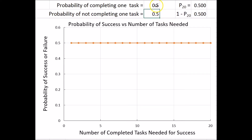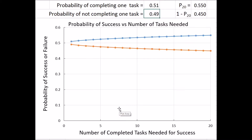Let's make our probability of success a little bit higher — I'm going to make it 0.51. The probability of failure would be 0.49. And you can see in the blue curve, the probability of success increases rather dramatically just by increasing your edge a little bit — improving your skill and increasing your ability to complete that task.